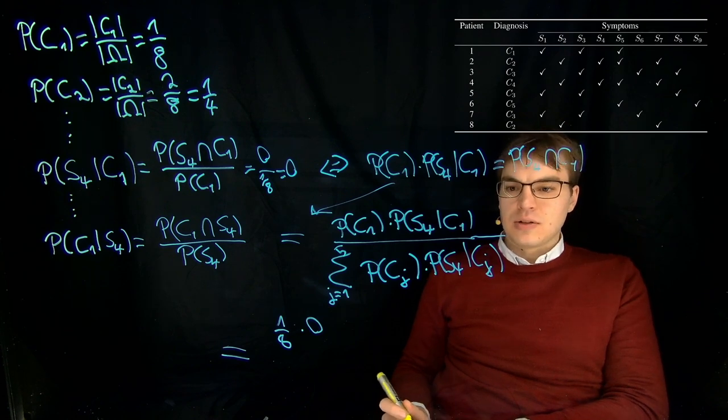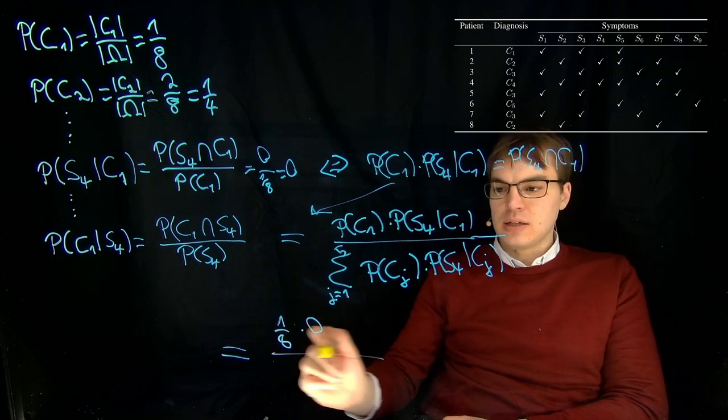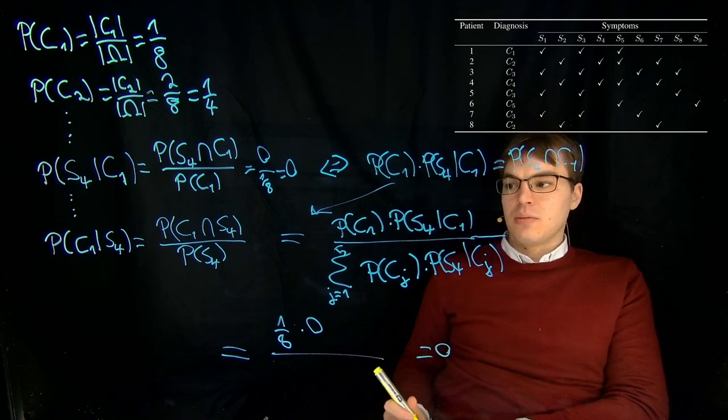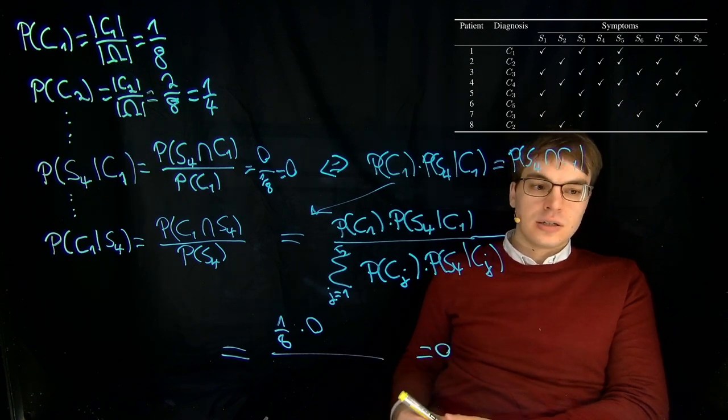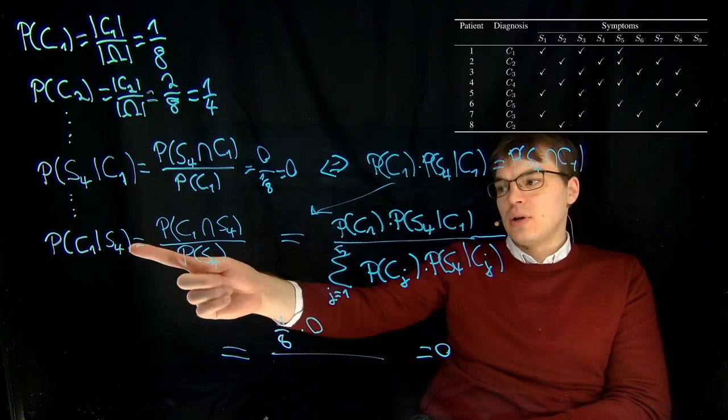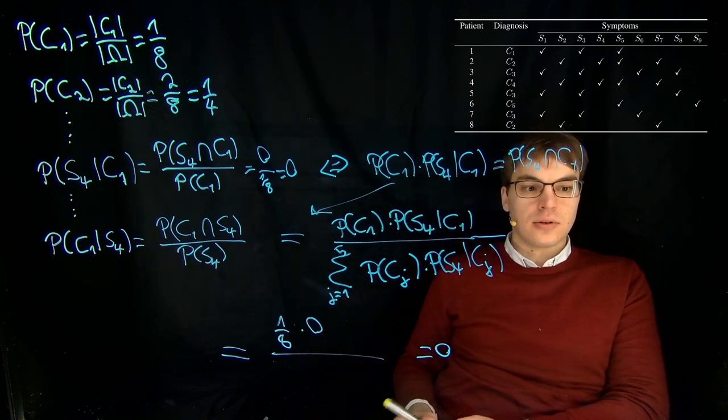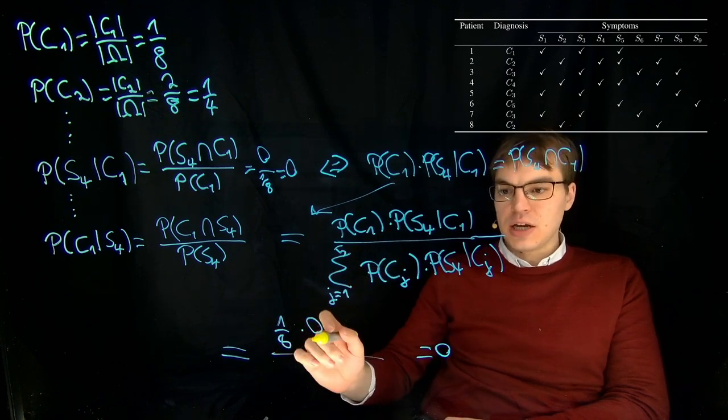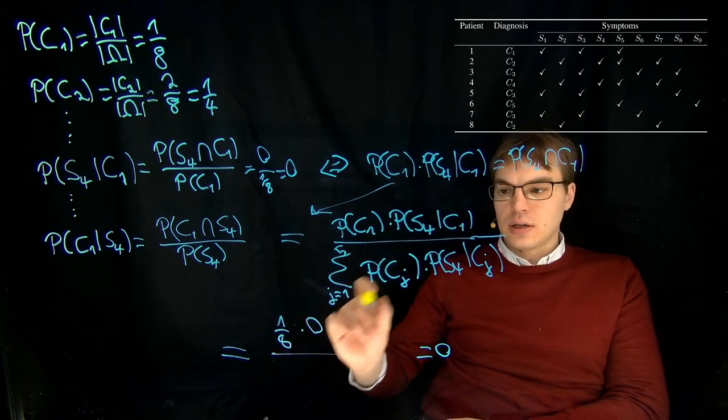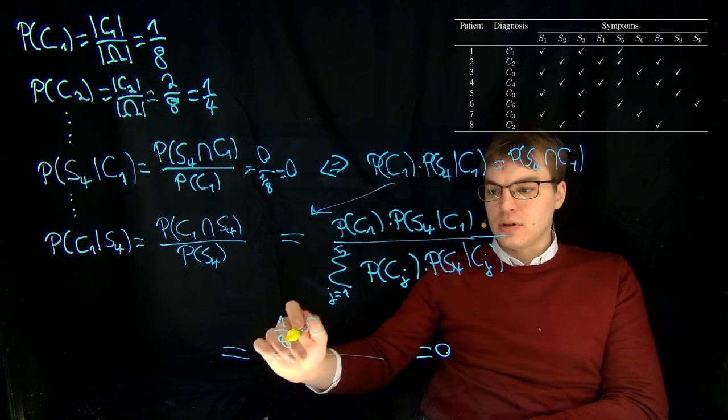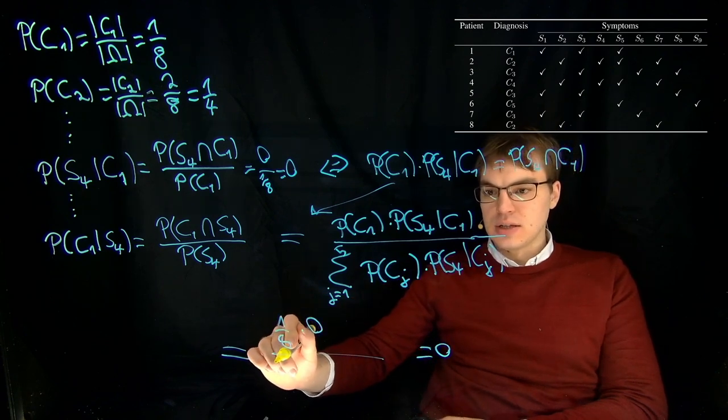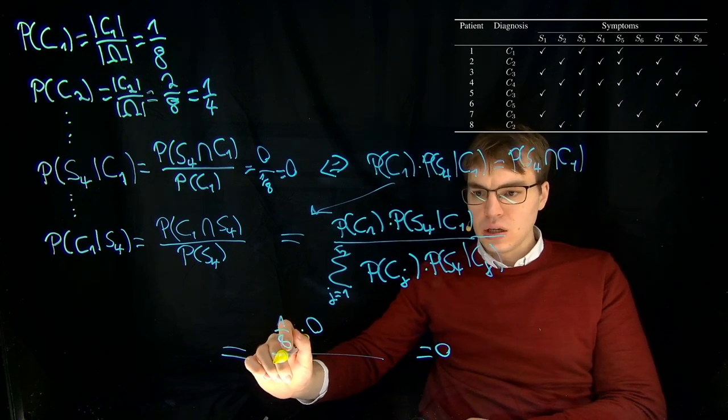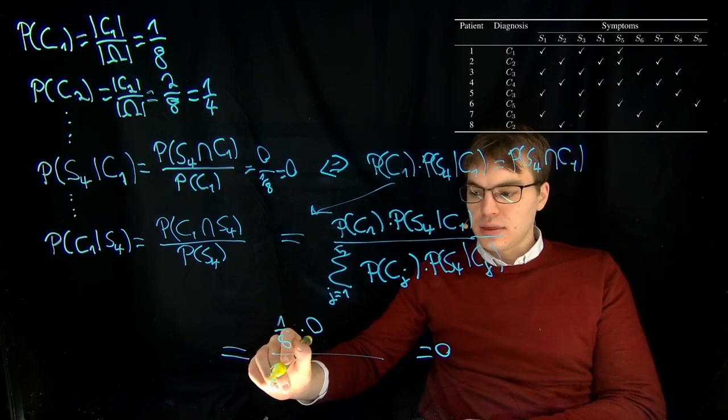Well, what happens here? No matter what we write here, we will get zero in the end. So the probability that a patient indeed has disease C1 if we observe the symptom S4 is zero. But let's finish this computation over here. So we have this term for j equals 1, and what we get is one eighth times zero.